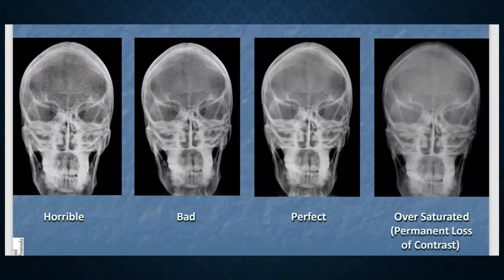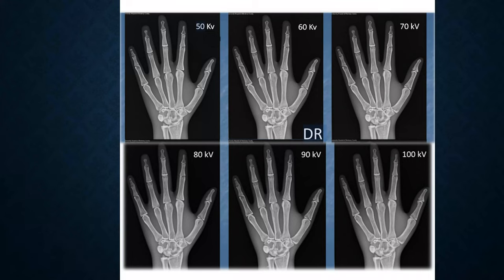Looking at the index and DI numbers is the key to critiquing an image. If you're going to look visually at the image, the only way you can tell if it's not acceptable is if it has too much quantum mottle — too noisy — or if there's burn. In the past, we'd be able to look at an image and tell it does not have enough KV to be acceptable.